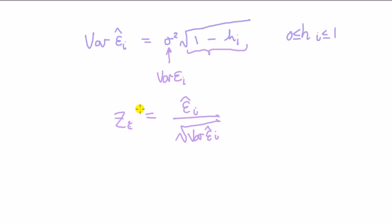Similarly, with studentized, we're going to take the residual divided by the square root of the variance of the residual.